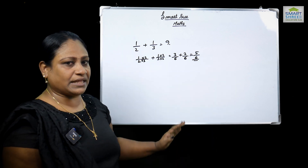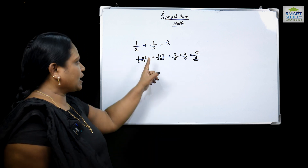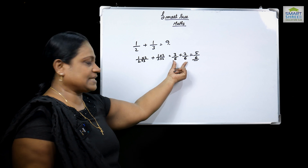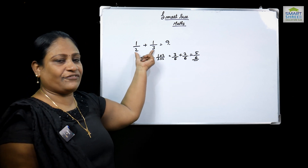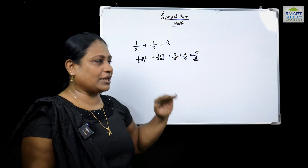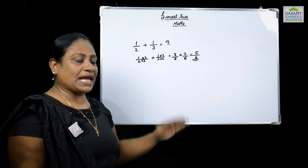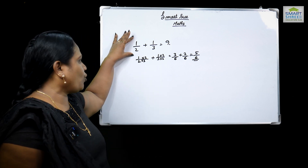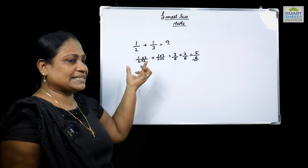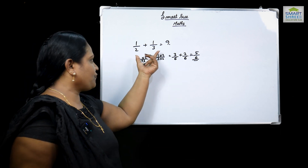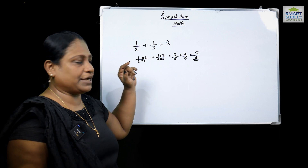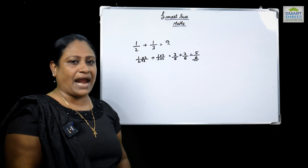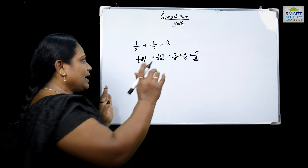We can also do this using cross multiplication. 1 into 3 plus 1 into 2 gives 3 plus 2 by 6, which is 5 by 6. That is the denominator. We can do the same thing with a different question — we can simplify it in the same way.